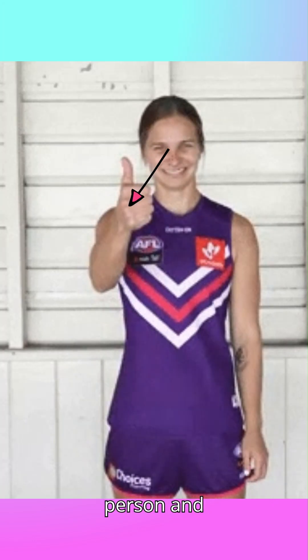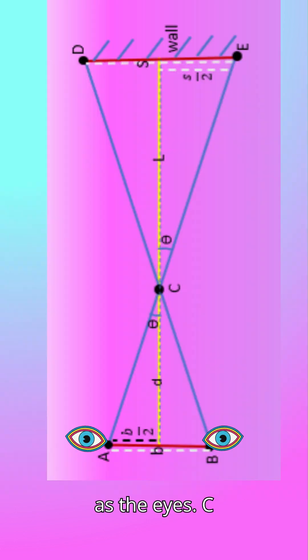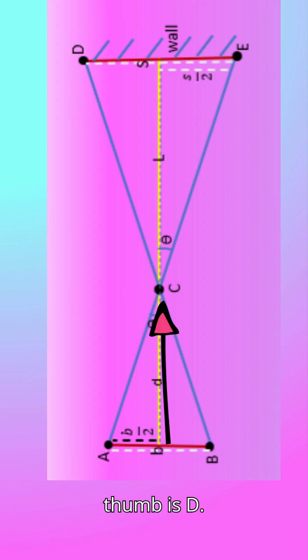The calculation for the distance between a person and thumb. Let's take the points A and B as the eyes. C is the thumb. The distance between the person and the thumb is D. The D and E are the points where thumb shifts on wall while seeing with left and right eyes. Let this shift is S. The distance between wall and thumb is L.